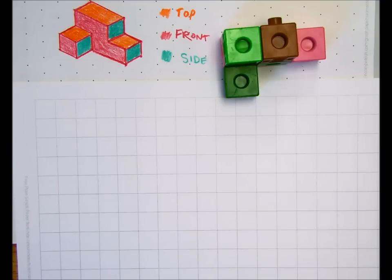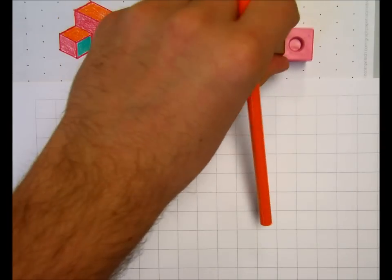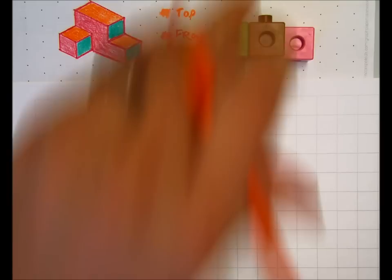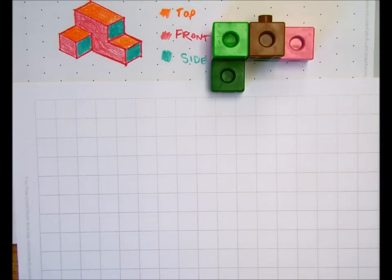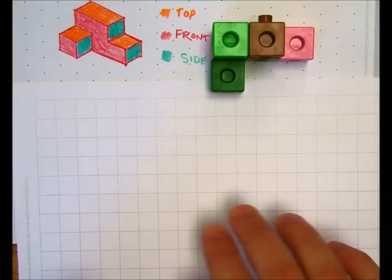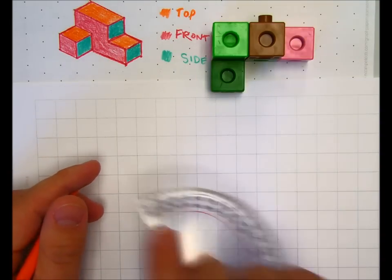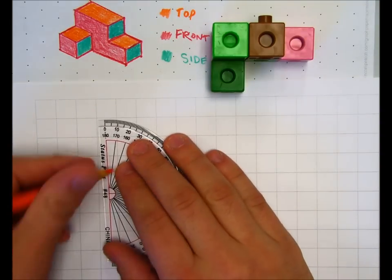So last but not least, I'm going to show you how to do the top, front, and side views of an object. Now, as you can see, I've rearranged my camera so that we now see only the top, or hopefully just the top, of our figure. And you'll notice that it looks sort of like a sideways L. And that's exactly what we're going to draw. We're going to use our grid paper now to draw the top view of this figure.